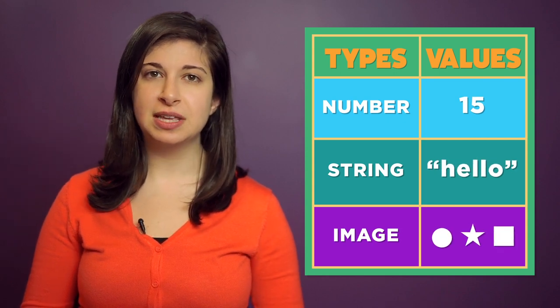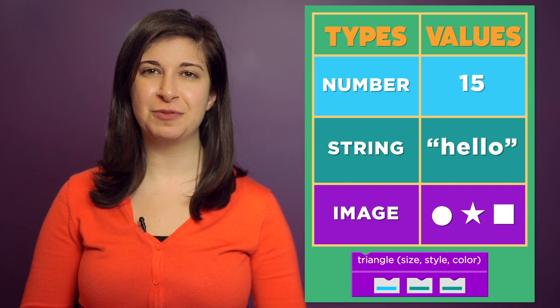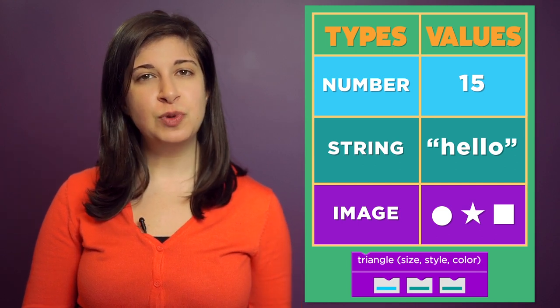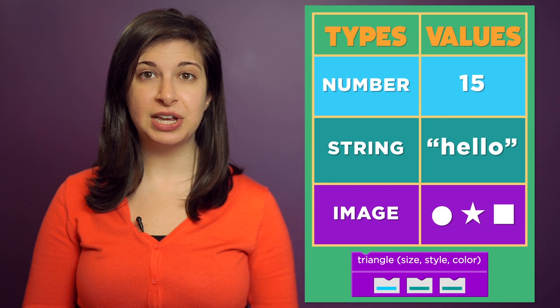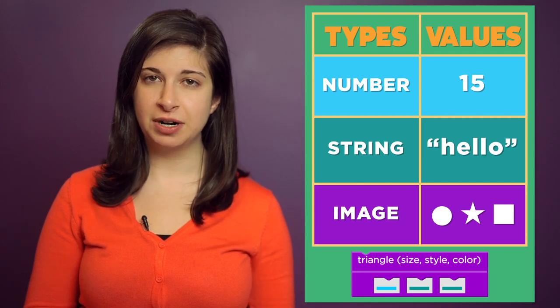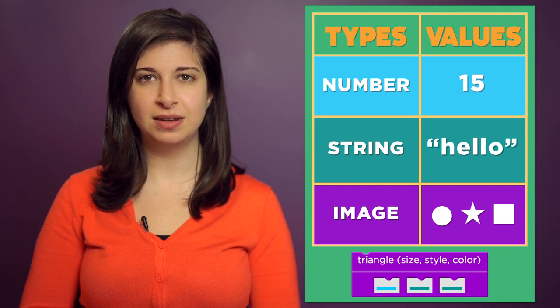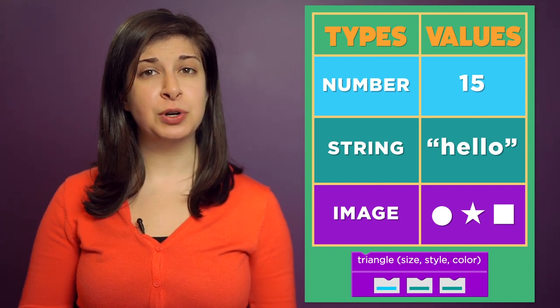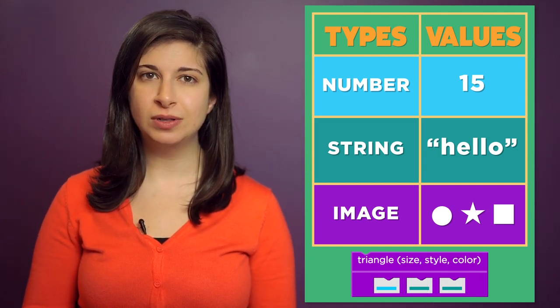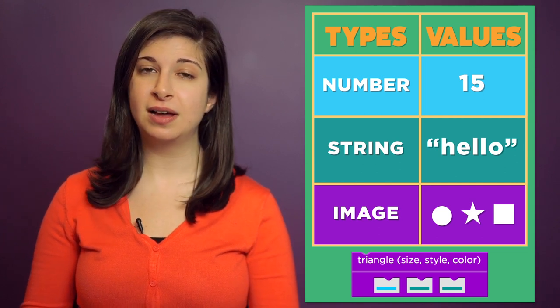You probably noticed that this code is a lot more colorful than what you wrote in the last stage. Evaluation blocks are color coded to tell you what type of data they will return. And the slots are color coded by the type of data they need. Just as you can't put a round peg in a square hole, you can't put a purple block in a blue slot.